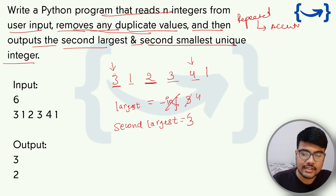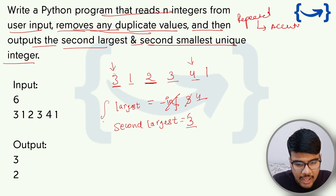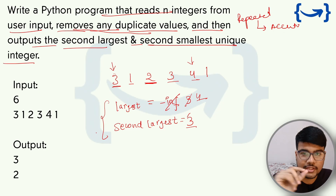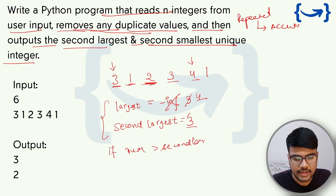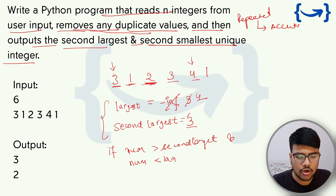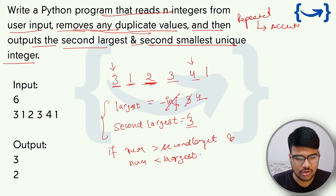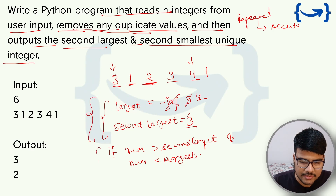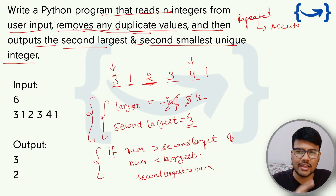There's a second case needed: if a number is greater than second_largest but less than (or not equal to) largest, update second_largest directly to that number. This handles scenarios like a descending array where the second largest isn't seen just before the largest. So in the for loop, you need two if statements: one to update both largest and second_largest when num > largest, and one to update only second_largest when largest > num > second_largest.